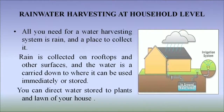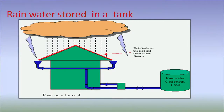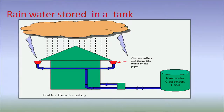We would like to discuss about rainwater harvesting at the household level. Imagine this is a household — all you need for a water harvesting system is rain and a place to collect it. Rain is collected on rooftops and other surfaces, and the water is carried down to where it can be used immediately or stored. You can direct water stored to plants and lawns for your use. Here you can see that the water is taken down through pipes into a tank, and from the tank it can be used for irrigation. The next slide also shows rain falling on the rooftop, with gutters on either side to collect the water, going down through pipes; then a filter pump filters the water and it is collected in the tank.